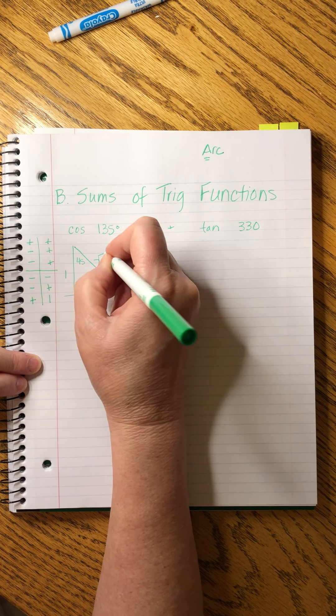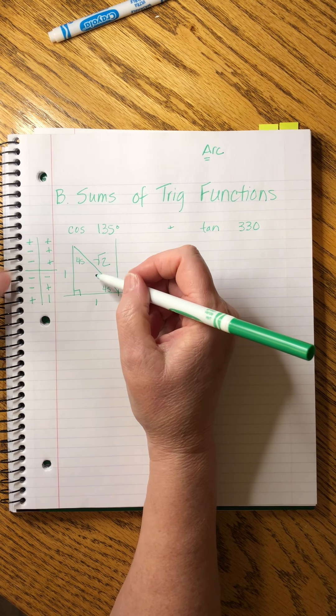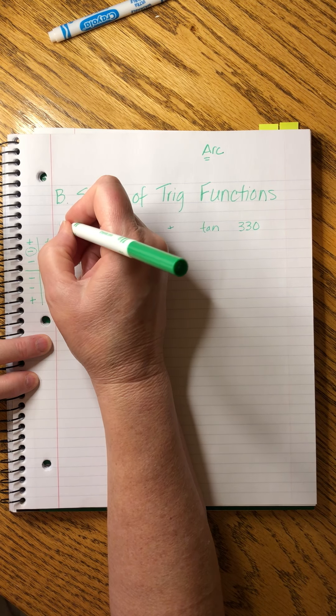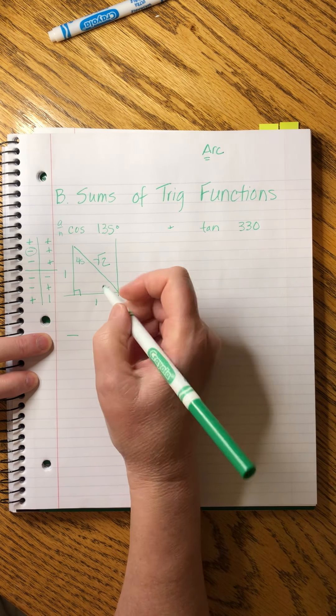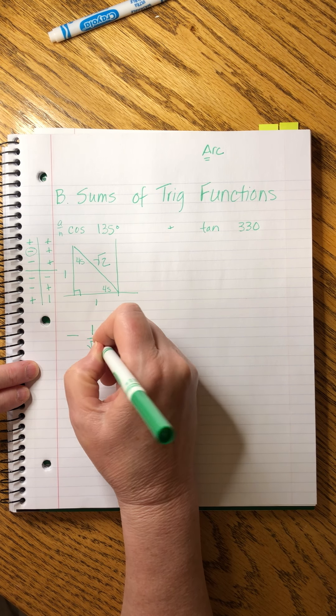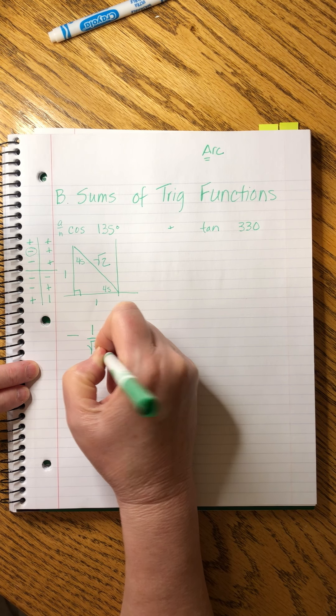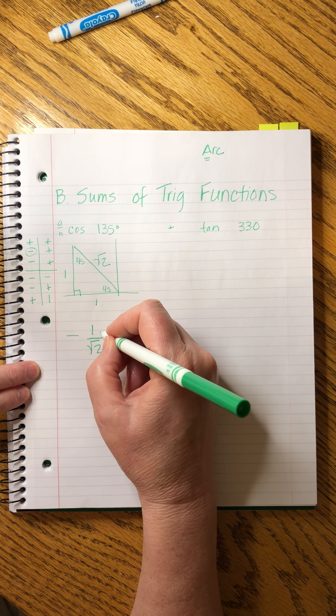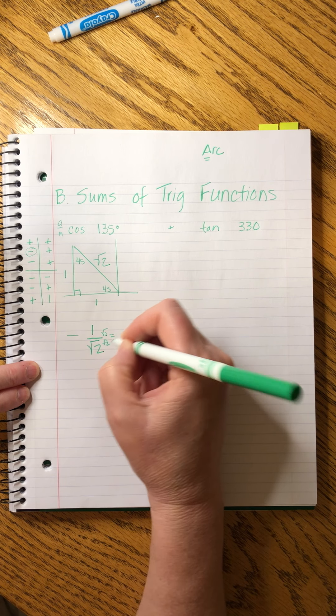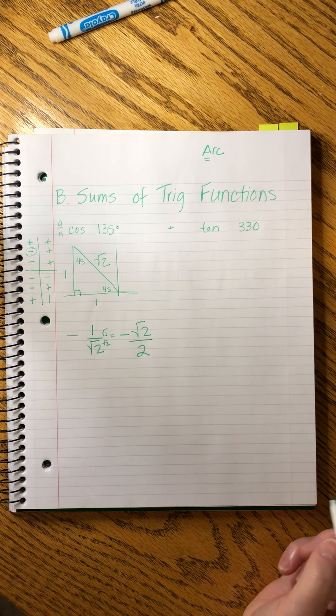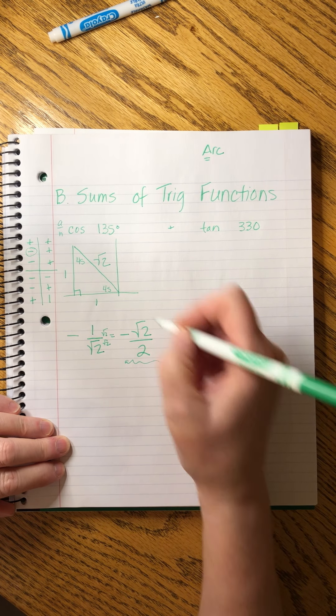So this is 45 and that means it's one of our cute little guys: one, one, square root of two. So the cosine of 135 is negative. Cosine is Oscar had a hold. So it's adjacent, it's negative one over square root of two. And I can rationalize that right away. I'm going to multiply it by square root of two over square root of two. And that will give me negative square root of two over two. Let's stop right there. That's this much.